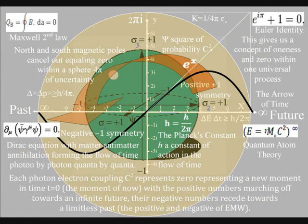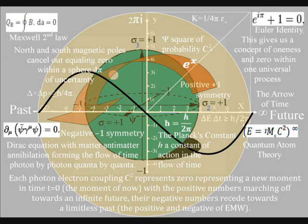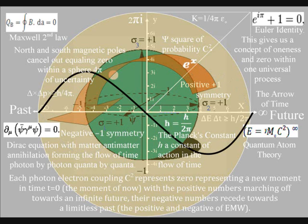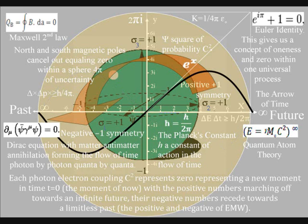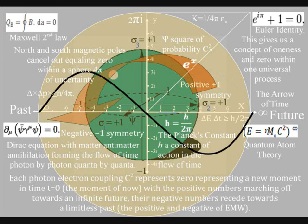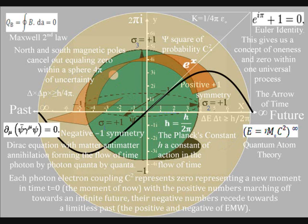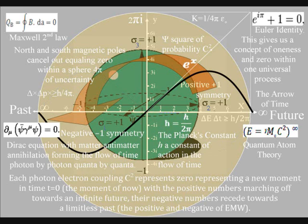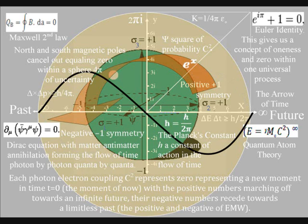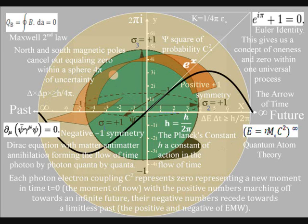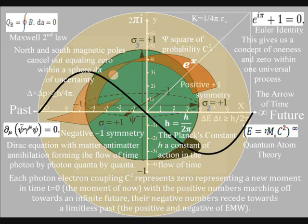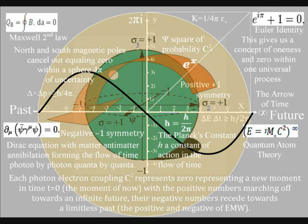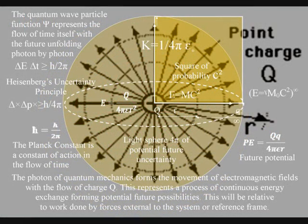This diagram shows the complex plane with the positive and negative numbers and the imaginary numbers going off at right angles, with zero in the centre. This still represents the geometry of a physical process. The zero represents zero time, or t equals zero — the moment of now — formed by light interacting with matter, with the positive numbers marching off forming a potential future with a square of probability, and the negative numbers receding towards a limitless past, representing the positive and negative of electromagnetic waves. In the top left hand corner we have Maxwell's second law, with north and south magnetic poles cancelling out, equaling zero within a sphere of uncertainty.